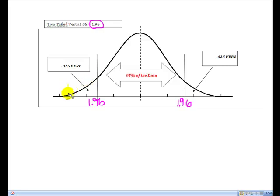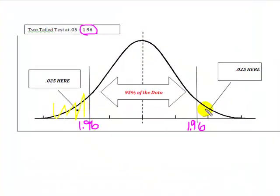If my calculated test value falls in this tail or in this tail, in other words, if it falls above 1.96 or below negative 1.96, then I am going to reject.